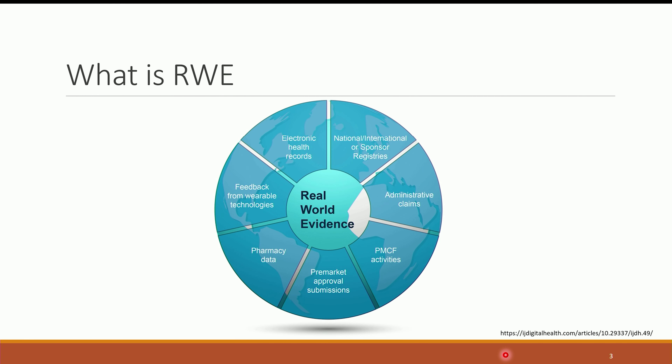As you've already heard, the types of data we consider real-world evidence data include electronic health records, sponsor registries — this is where we get most of our cancer data, not from EMR itself but from the registries — administrative claims, pre- and post-market and pharmacy data, as well as feedback from various technologies.